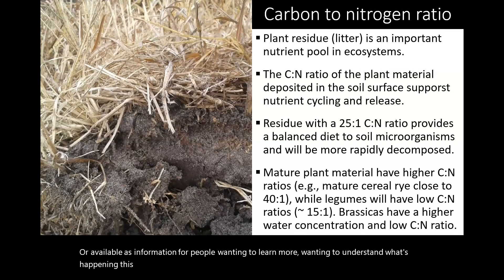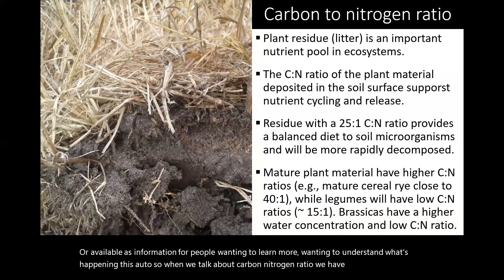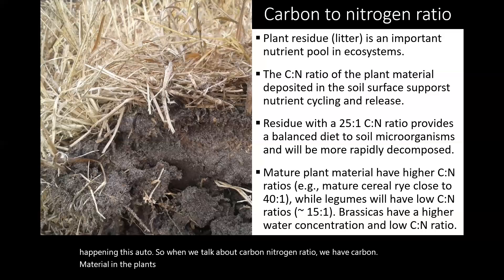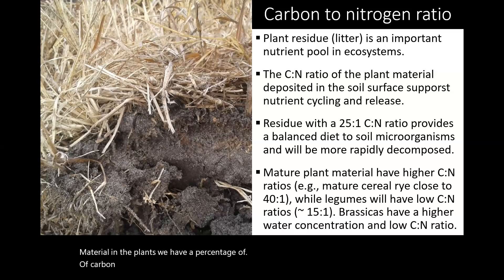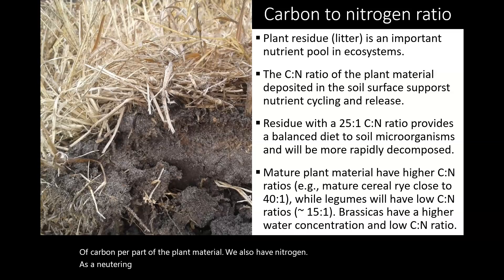When we talk about the carbon to nitrogen issue, we have carbon material in the plants — a percentage of carbon per part of the plant material. We also have nitrogen as a nutrient in the plants, mostly on the leaves, and other nutrients as well.